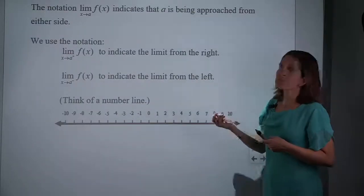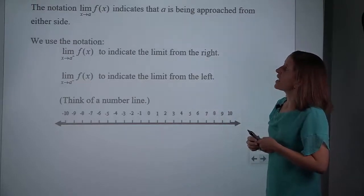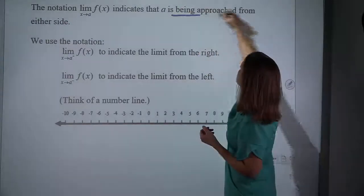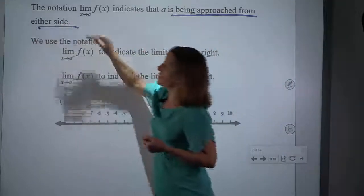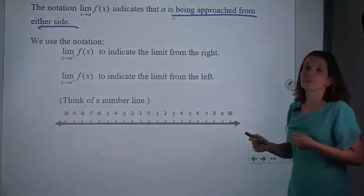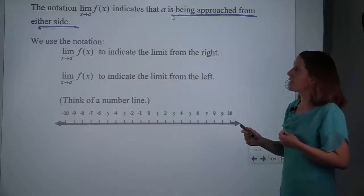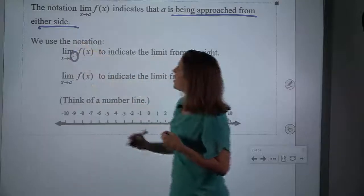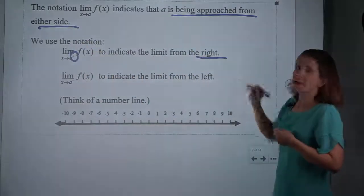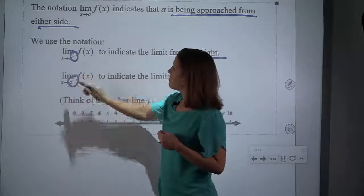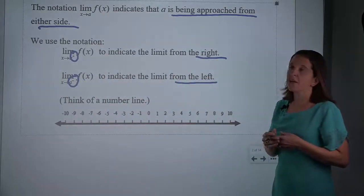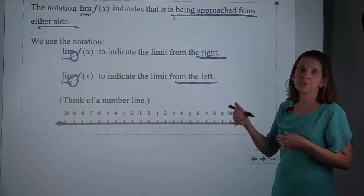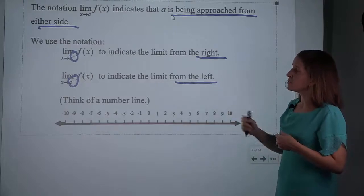First we need to break down that notation. It says 'the limit as X approaches A.' That is actually the notation for approaching A from both sides. And so if instead we mean to just be approaching from one side or the other, we have notation for that. A little superscript plus means you are approaching from the right, and a little superscript minus means you are approaching from the left. We need to be really careful that those superscripts are just notation — they do not actually change the value of A.